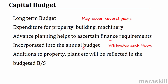Capital budget is a long-term budget involving expenditure on capital assets. We make this budget so that finance requirements for the future can be planned, known, and arranged for. It is incorporated into the annual budget. Additions to property, plant, etc., are reflected in the budgeted balance sheet. Some parts of the project — for instance, machinery in capital work in progress — may find their place in the budgeted balance sheet.